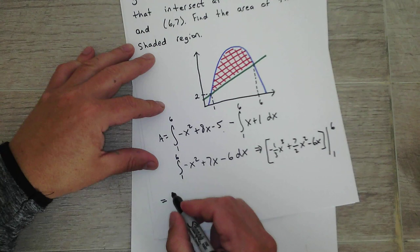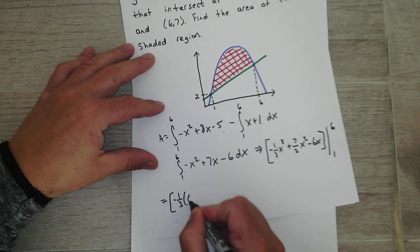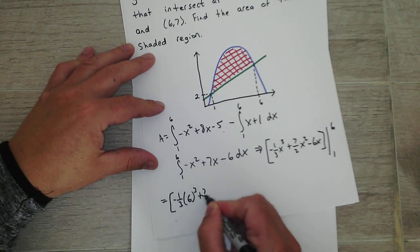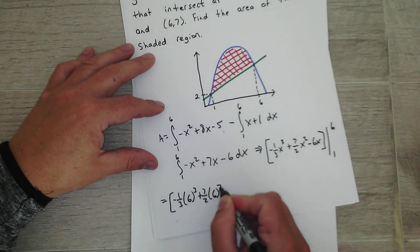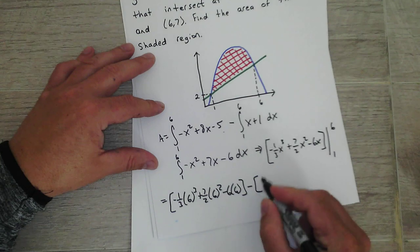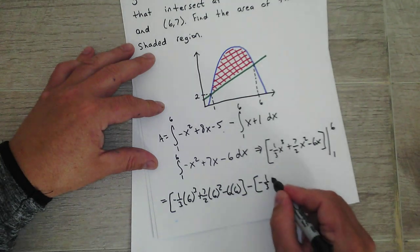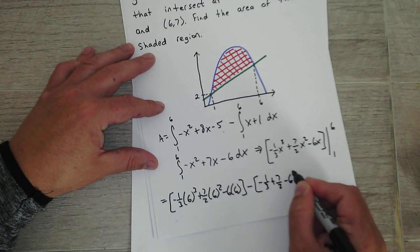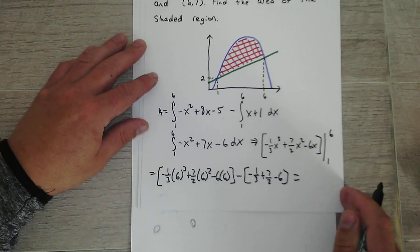So we get negative 1 third times 6 cubed, plus 7 halves times 6 squared, minus 6 times 6, minus... plug in 1. So that's just going to make all this go to 1.